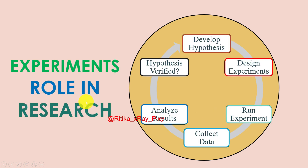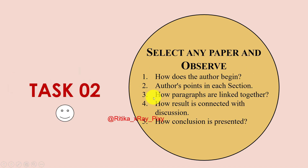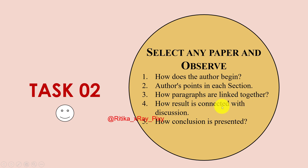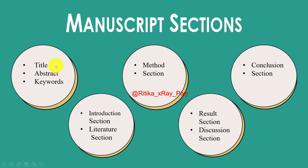Useful means results should be significant. If the second time you run the experiment it makes limited impact on overall performance, that is a concern. Select a research paper and observe how paragraphs are linked together, check the author's points in each section, how paragraphs are linked, how results are connected with discussion, and how the conclusion is presented.